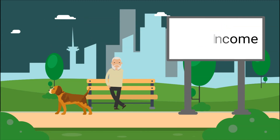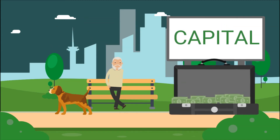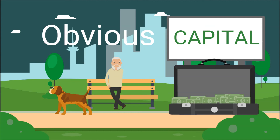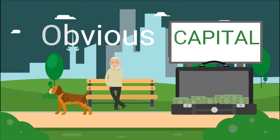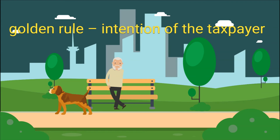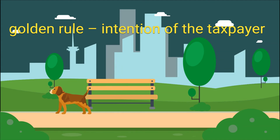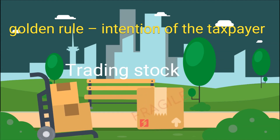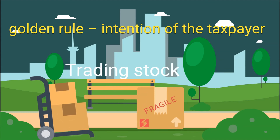The next term is capital. Capital is not defined in the act. More often than not, it is obvious when an asset is capital and not revenue. But where there is uncertainty and clarity is required, the courts have relied on the golden rule: the intention of the taxpayer. Therefore, if you buy and sell houses to make a living, the income tax rules will apply to you. Generally, trading stock will form part of someone's gross income.